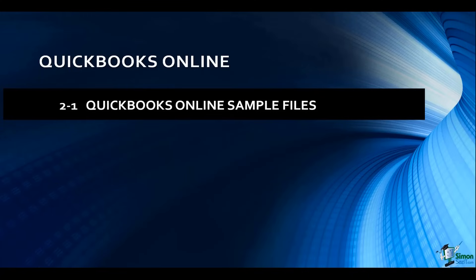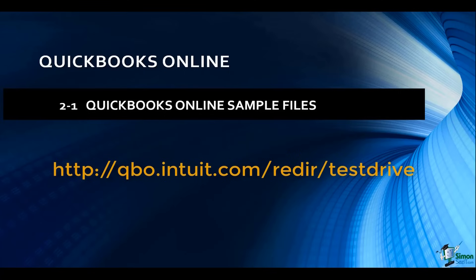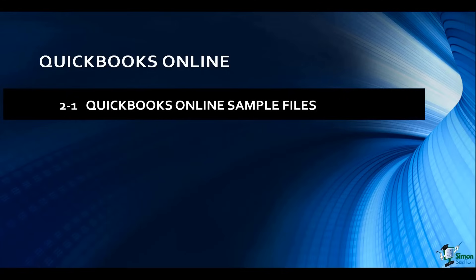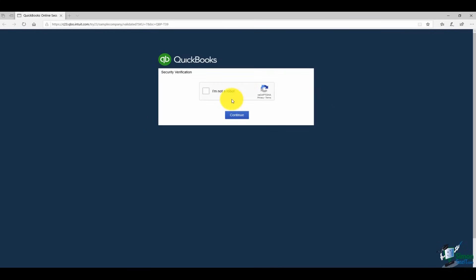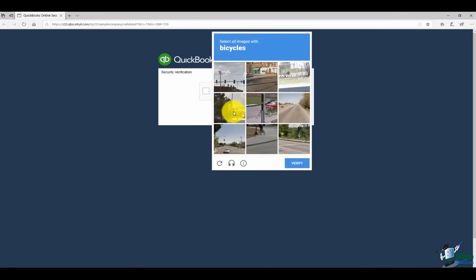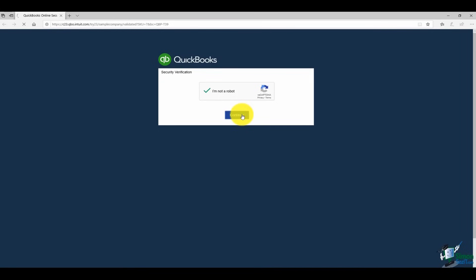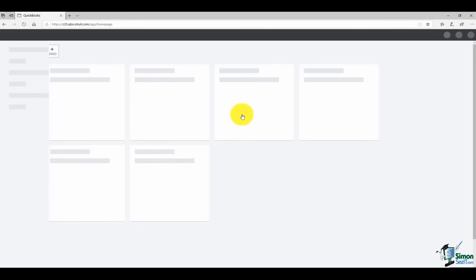You also have access to a sample file you can play with as much as you want — you do not have to sign up for a subscription to access it. Just navigate to qbo.intuit.com/redir/testdrive and the company file you'll be working with is Craig's Design and Landscaping Services, a service-based business. The first thing you'll have to do is verify you're a real person by checking the 'I'm not a robot' box. Every day they update the date, so you'll be working in the year 2021 in the practice exercise.